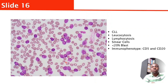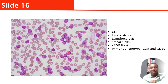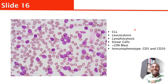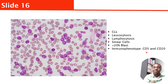This is chronic lymphocytic leukemia, CLL. You can see a lot of mature lymphocytes and a high cell count — think about chronic lymphocytic leukemia. The giveaway here is smear cells. Once you see smear cells, that's the giveaway. You do immunophenotyping to confirm it. With CLL, they commonly express CD5 and CD20.